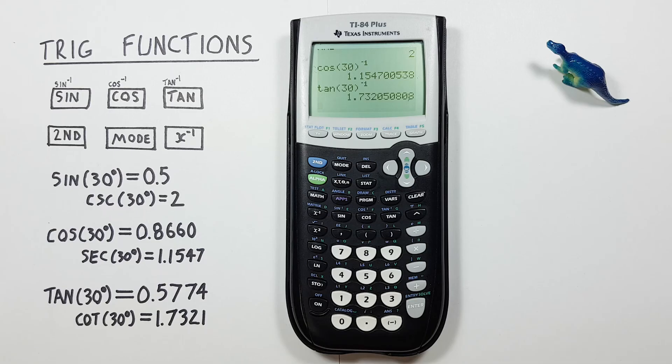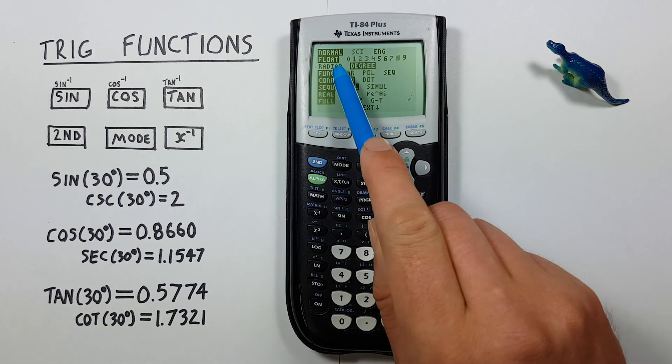If you wanted to work with radians, you would follow these same steps, except in the mode menu, choose radians.